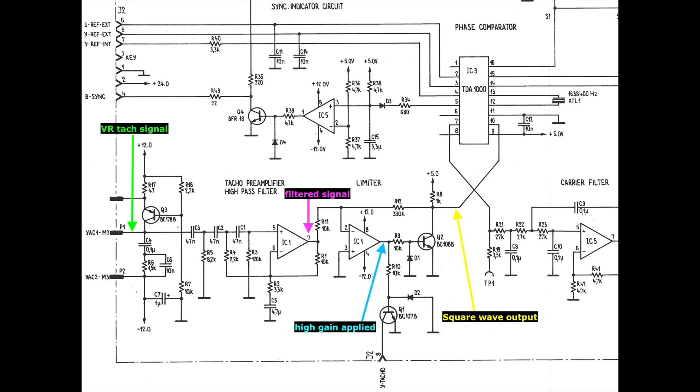The positive half of that signal drives the base of NPN transistor Q2, which results in a clean square wave at the collector, assisted by providing a slight positive feedback to the op-amp to add hysteresis. The colored arrows indicate where I'll be placing scope probes to assess the performance.